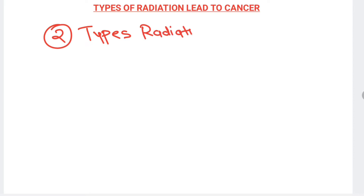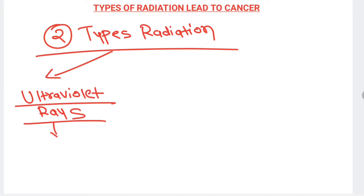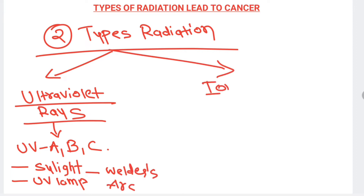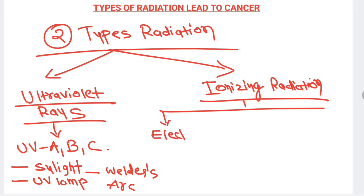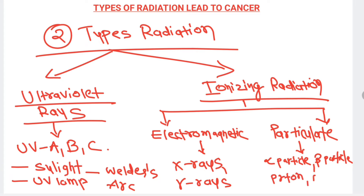There are two types of radiation exposure that lead to cancer development. One is ultraviolet rays, and the second is ionizing radiation. Ultraviolet rays — particularly UV-A, B, and C — could be responsible for cancer development, with sources including sunlight, UV lamps, or a welder's arc. Ionizing radiation can be electromagnetic (X-rays and gamma rays) or particulate (alpha particles, beta particles, protons, and neutrons).